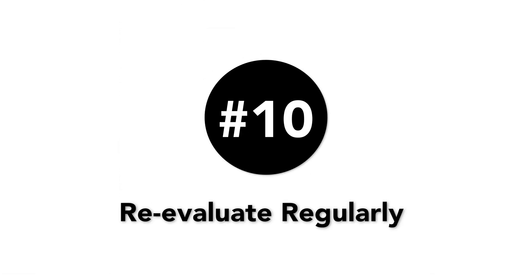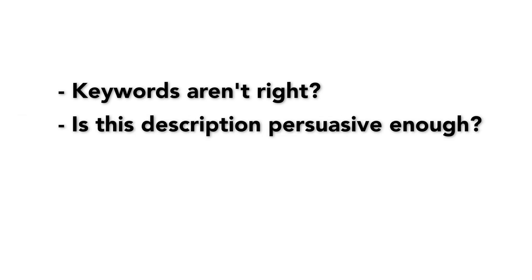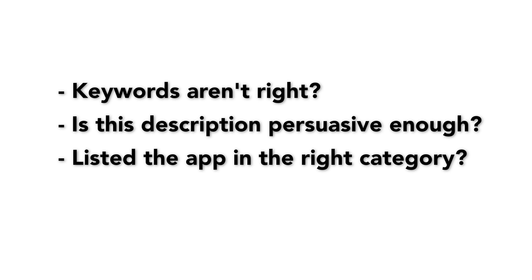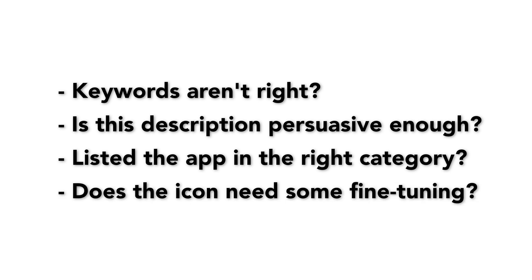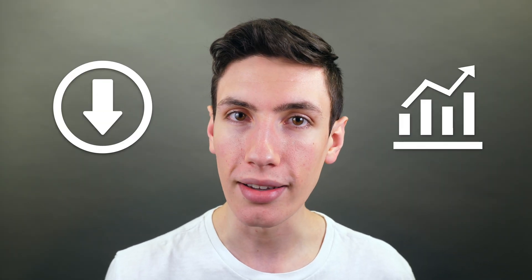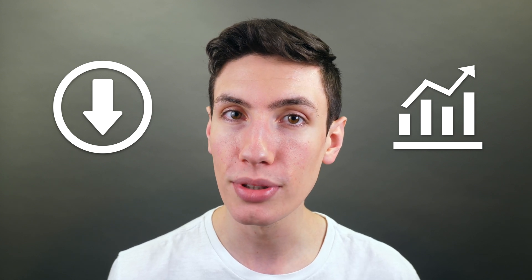Number 10: Re-evaluate regularly. If some time has passed and you're not pleased with your app's current app store ranking, it's time to take a look at the data and change some things around. Maybe the keywords aren't right. Is the description persuasive enough? Are you sure you listed the app in the right category? Does the icon need some fine tuning? All of these things and more can be improved to get a higher ranking. There's a direct correlation between downloads and ranking — the more downloads your app has, the more popular it's perceived to be, and the higher it's ranked.